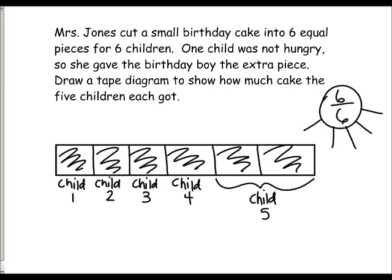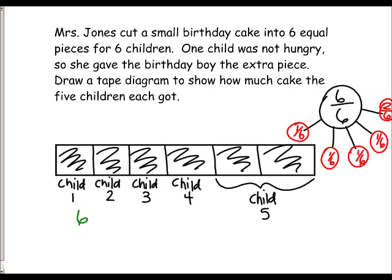Then we're going to go back over to our number bond to match our tape diagram. On our number bond, we're going to label each child with what they ate: one-sixth, one-sixth, one-sixth, one-sixth. And that last child ate two out of six. Then we can give the addition sentence for fourth grade using addition of fractions. We know that six out of six is equal to one-sixth plus one-sixth plus one-sixth plus one-sixth.